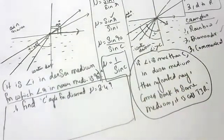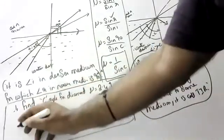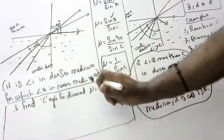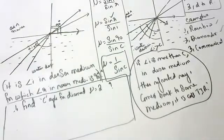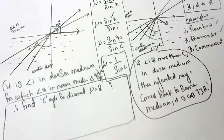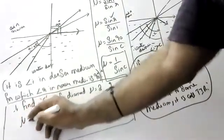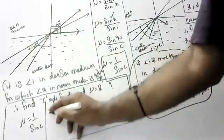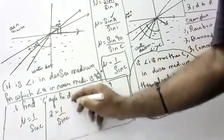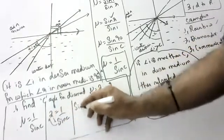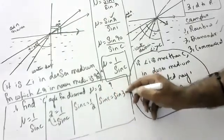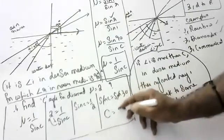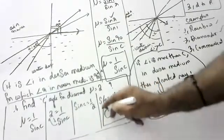Critical angle for diamond whose refractive index is 2.4. Easy method — let's take mu as 2 for simplicity. Using mu equals 1 by sine c: 2 equals 1 by sine c, so sine c equals 1 by 2. Since sine 30 equals 1 by 2, the critical angle c equals 30 degrees. Apply the same method for mu equals 2.4.